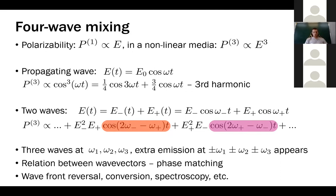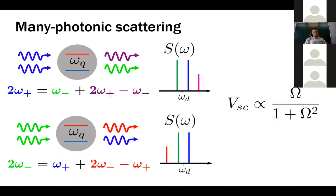This is called wave mixing: two waves are mixed and we obtain spectral components not present in the initial field. For more than two waves, there are many extra spectral components. It is well studied in traditional optics, and the conversion efficiency depends on phase matching — if the dispersion relation is complicated, you need to phase-match the wave vectors for good conversion.